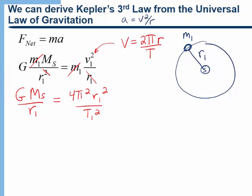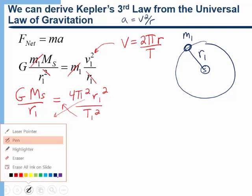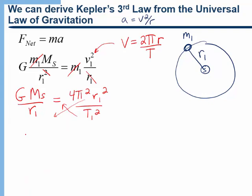And now I'm just going to rearrange this. I'm going to bring the T1² across and the r1² across. So in other words, cross multiply. And you'll notice that what I get is T1² over r1³. I'll bring the G and the M to the other side. And I get 4π² over G times the mass of the Sun.